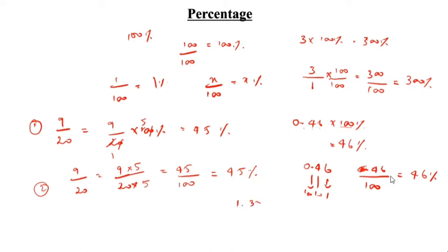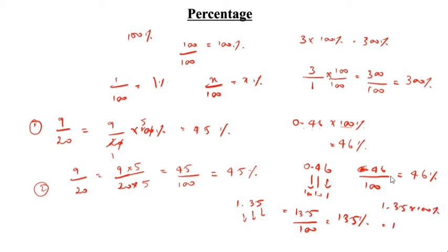Now 1.35. This is 1s, 10s, 100s place. So 1000s means 1,024 — wait, for 1.35: 1s, 10s, 100s means 135 divided by 100, which equals 1.35 into 100 percentage, giving 135 percentage. This is the second method.